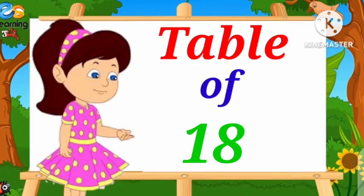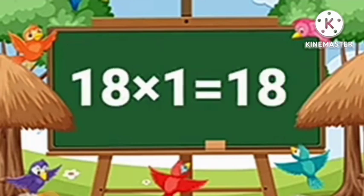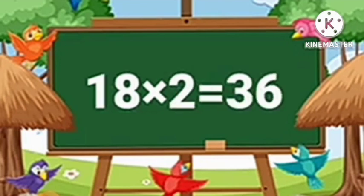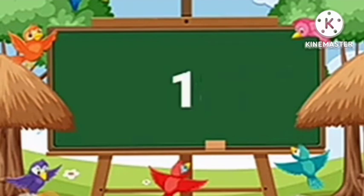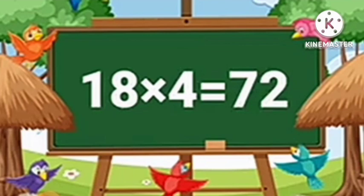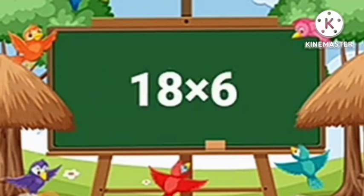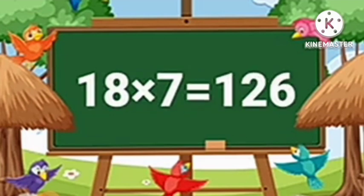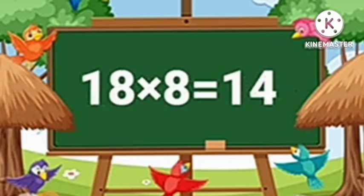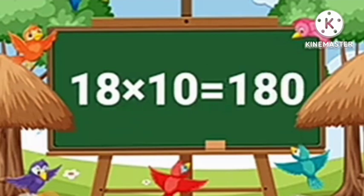Table of Eighteen. Eighteen-One's are Eighteen. Eighteen-Two's are Thirty-Six. Eighteen-Three's are Fifty-Four. Eighteen-Four's are Seventy-Two. Eighteen-Five's are Ninety. Eighteen-Six's are One Hundred and Eight. Eighteen-Seven's are One Hundred and Twenty-Six. Eighteen-Eight's are One Hundred and Forty-Four. Eighteen-Nine's are One Hundred and Sixty-Two. Eighteen-Ten's are One Hundred and Eighty.